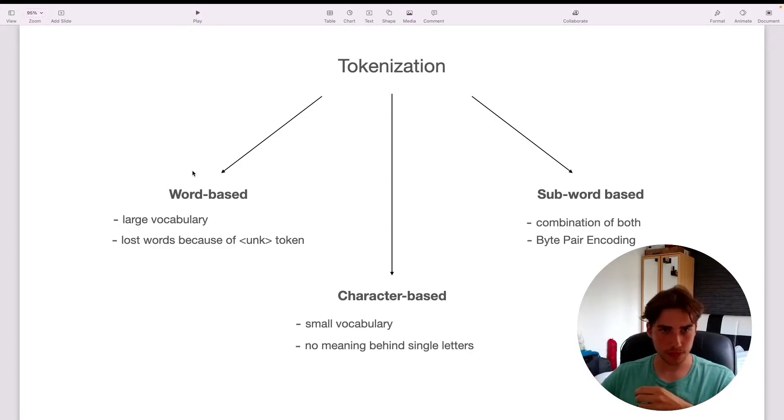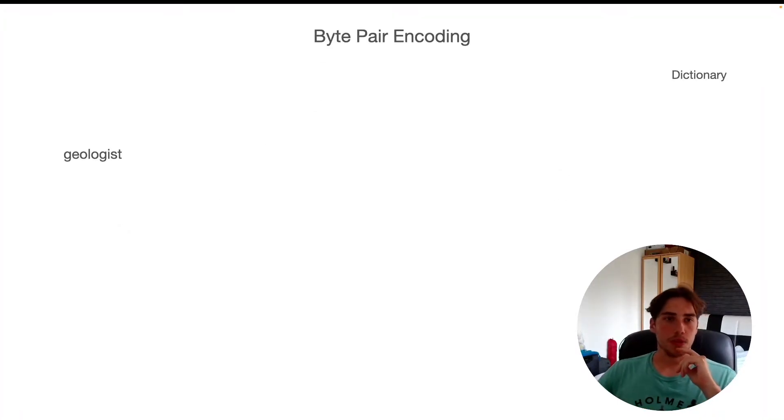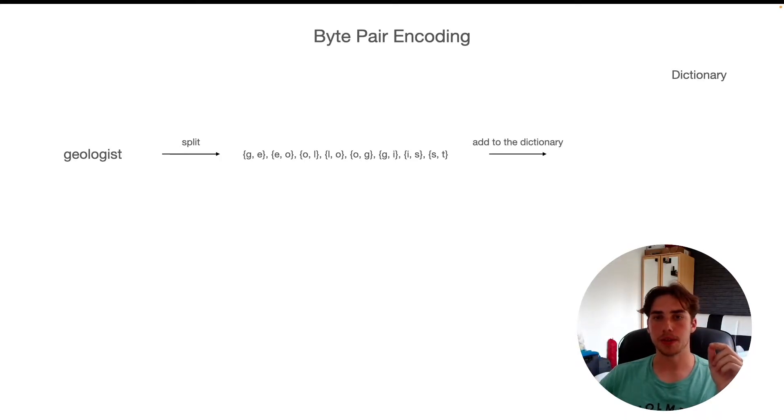Let me show you how it works. For example, let's say we've got the word 'geologist.' First of all, we split it into pairs, so you've got G-E, E-O, O-L, and so on. Then what we do is we create a dictionary where we calculate how many of these pairs occur in our dataset. In this case, we end up with one value for each pair.